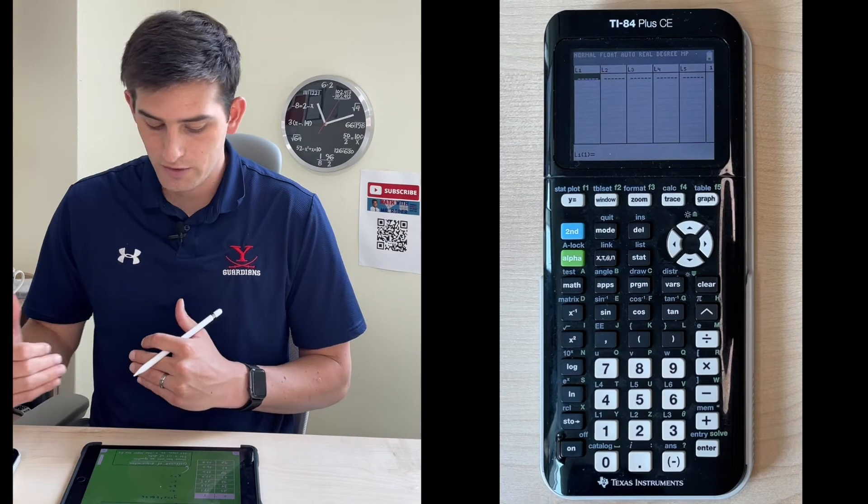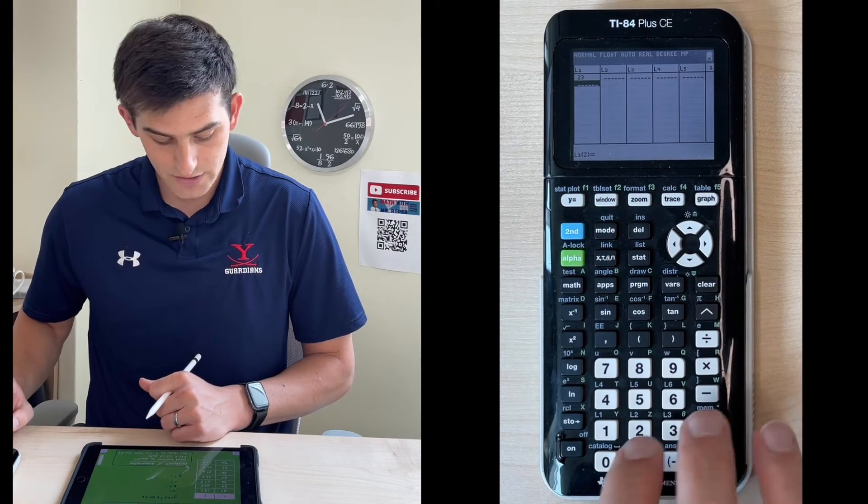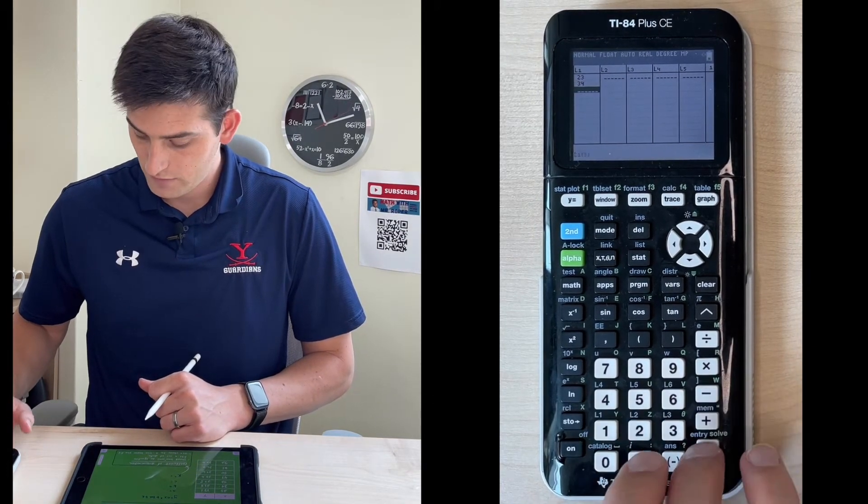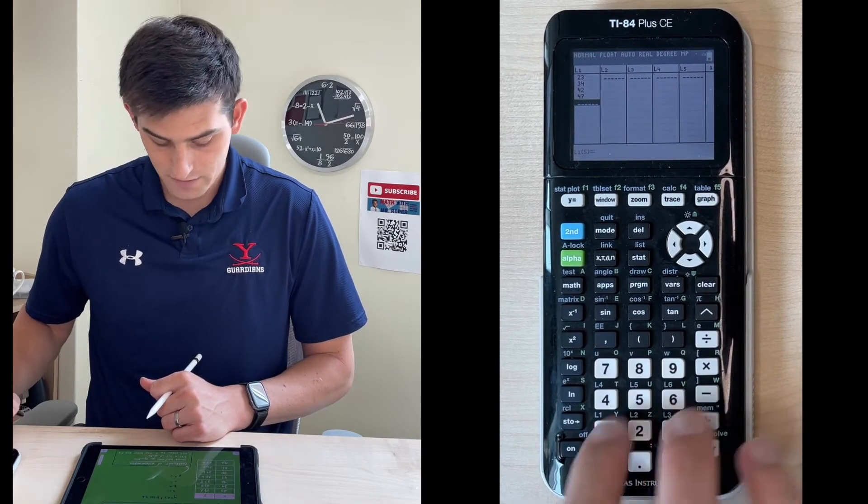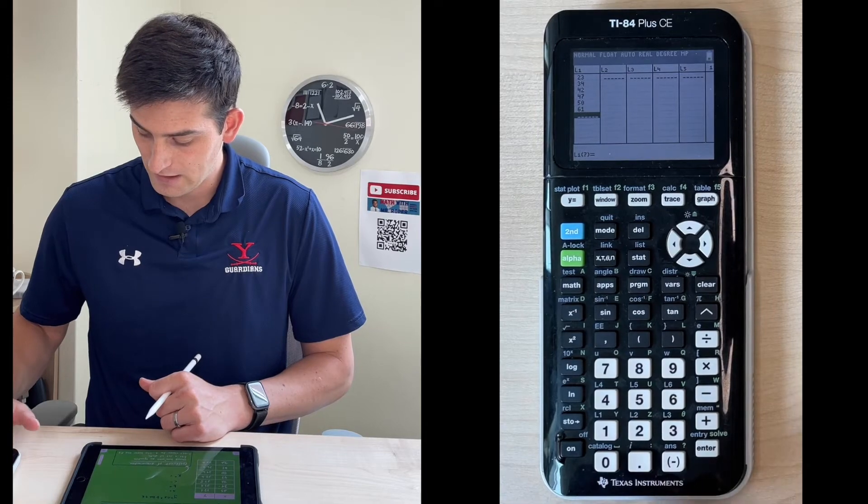For L1, we're going to list our x values: 23 enter, 34, 42, 47, 50, 61, and 72.